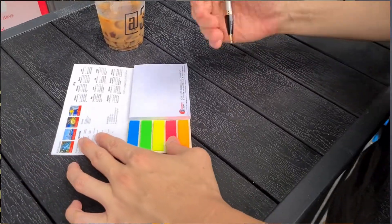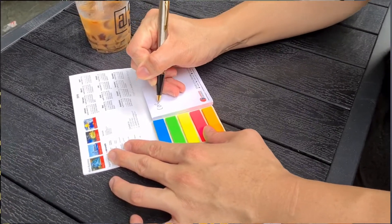This post-it pad allows you to write your to-do list over here, and it's 50 pieces of post-it pads.